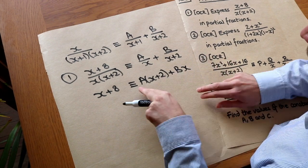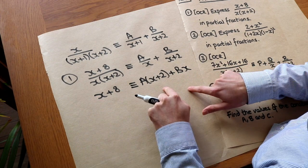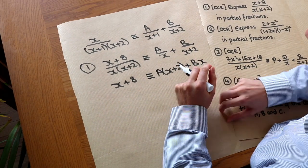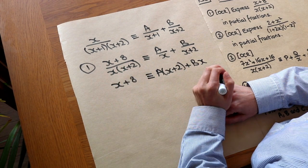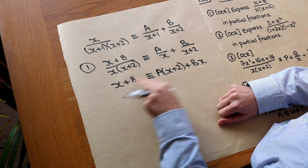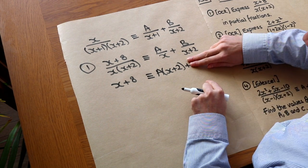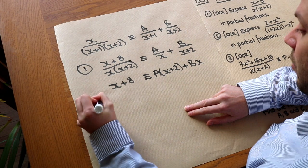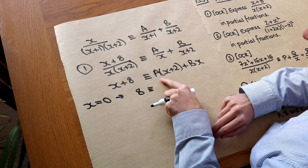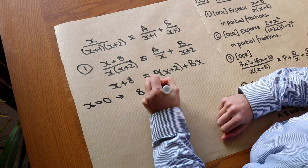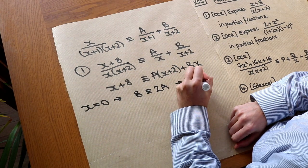You may be aware that if this is an identity, the coefficients of x terms must match on each side, and the coefficients of constant terms must match on each side. But there's a variety of ways of doing it. One way is to substitute in different values of x, which will hopefully let us see what A and B are. If we substitute x=0, that completely gets rid of the Bx term. So the left-hand side is 0+8 = 8, and the right-hand side gives 2A. The Bx term is wiped out because 0×B = 0. So A = 4.